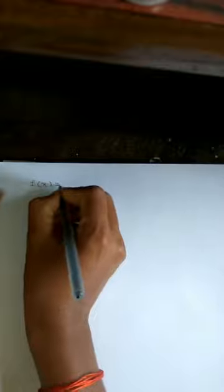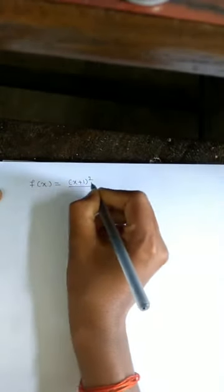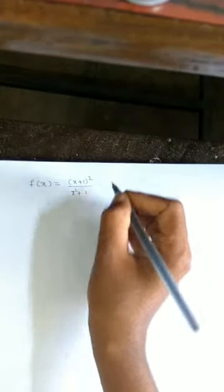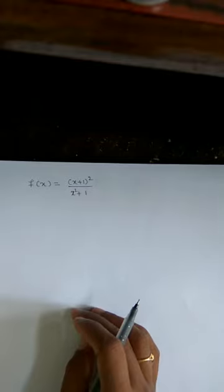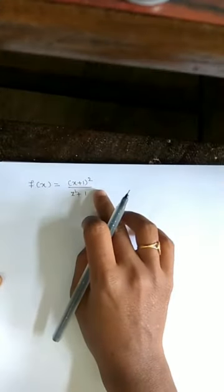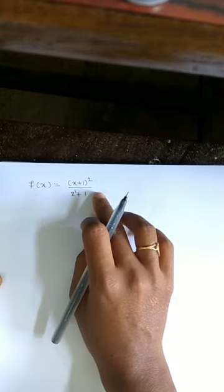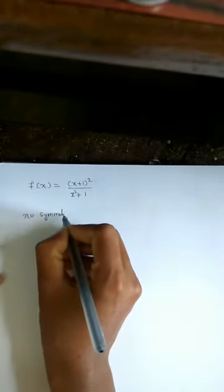Let us solve a problem on curve sketching. The first problem: sketch the graph of f(x) = (x+1)² / (x²+1). Step 1 — symmetry: observe that the given function is neither odd nor even, so there are no symmetries about the axes or the origin.